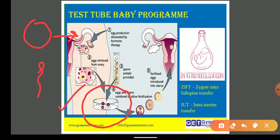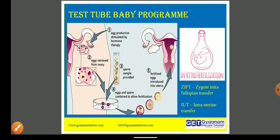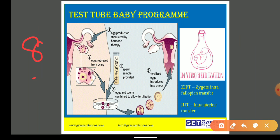Once the zygote has been formed, it undergoes cleavage. Then there is a four-cell division, then an eight-cell division. Once it has attained the eight-blastomere stage, there are two conditions. Either it can be transferred — embryo transfer into the fallopian tube — and this happens when eight blastomeres are formed.